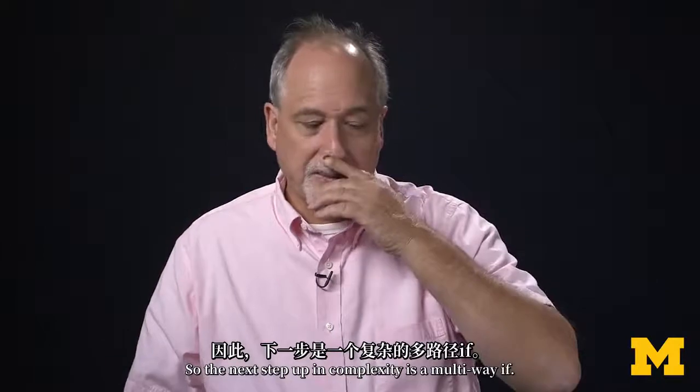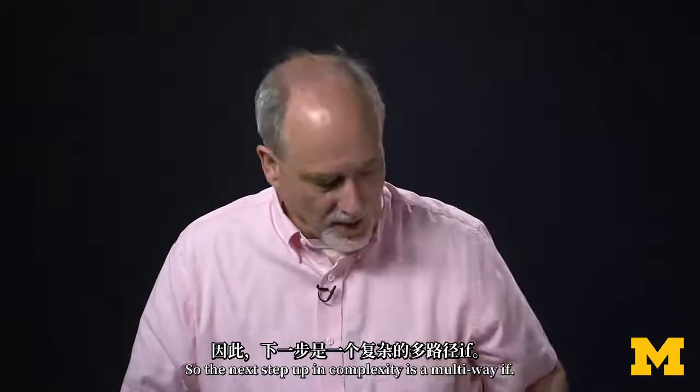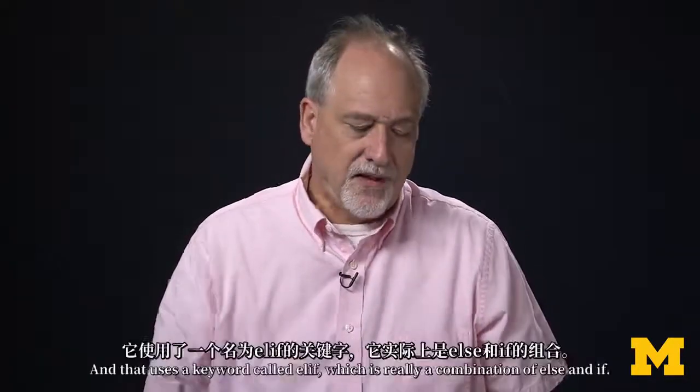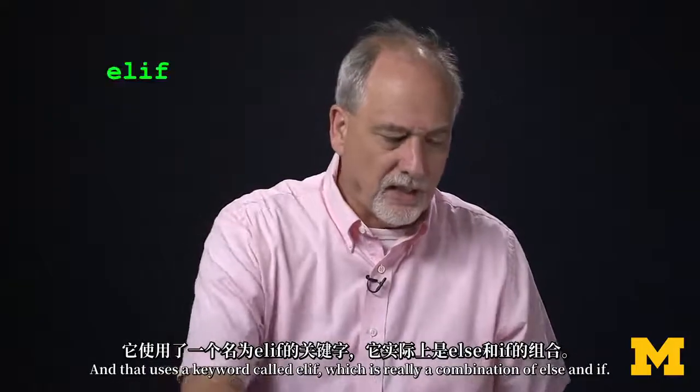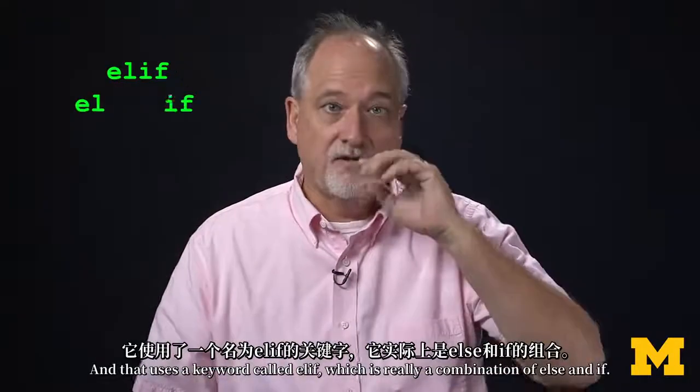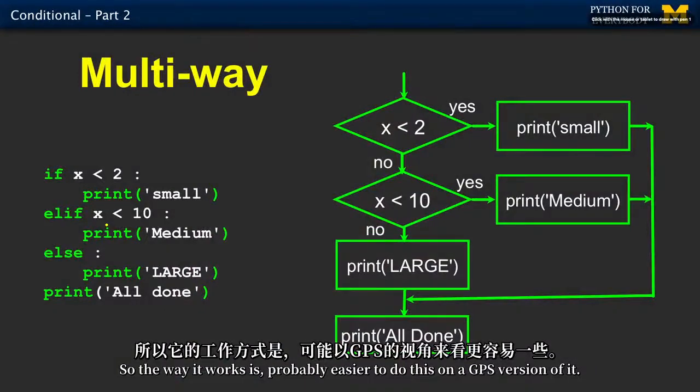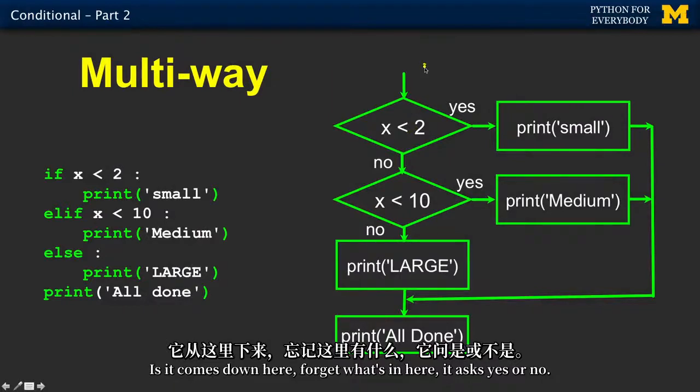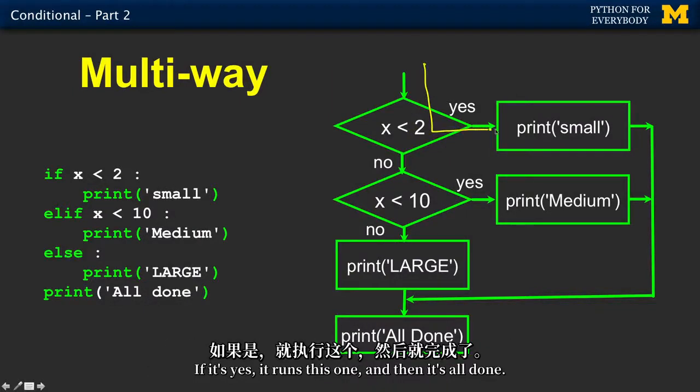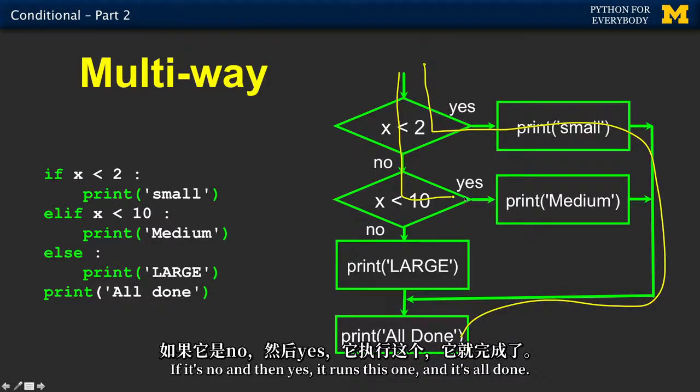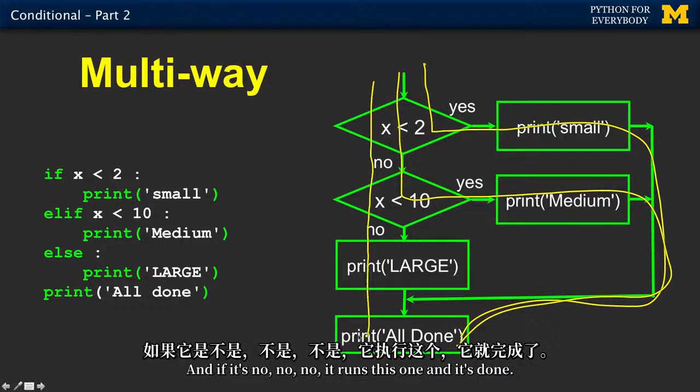The next step up in complexity is a multi-way if, and that uses a keyword called elif, which is really a combination of else and if. The way it works is, it comes down here, asks the yes or no. If it's yes, it runs this one and then it's all done. If it's no and then yes, it runs this one and it's all done. And if it's no, no, no, it runs this one and it's done.